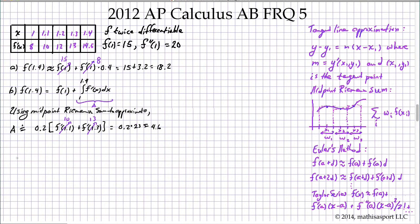So we have f of 1.4 is approximately equal to f of 1, which is 15, so we're taking 15 plus 4.6, and we get 19.6.